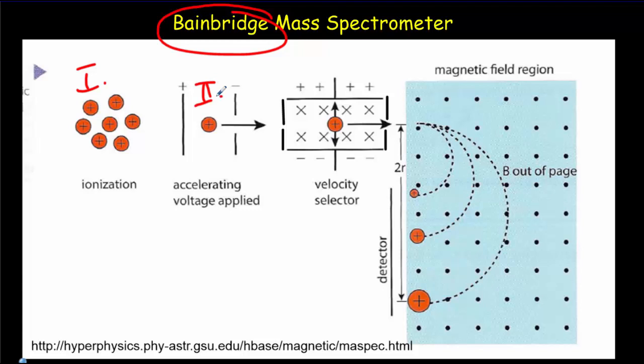And that's going to give the ions a fairly high speed. But they'll have a range of speeds as they enter into this third region, which is called the velocity selector region. And what the velocity selector region is going to do is narrow down that range of velocities. So you've got a very narrow range of velocities coming through the other side of the velocity selector. And their speed will be known very precisely.